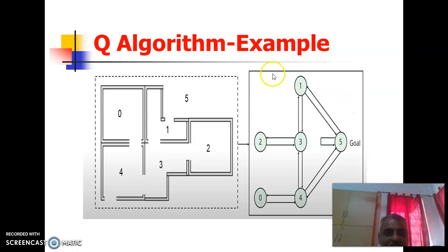Let us see an example of Q algorithm. Assume that you have a house, there are so many rooms, and each room will be considered as some state. A person is inside some state and from one room the person wants to go to another room that we will call it as another state.